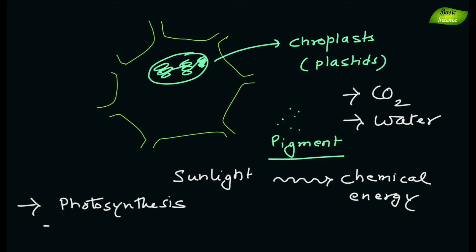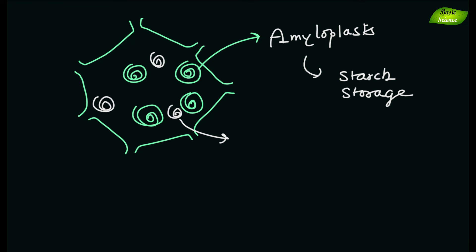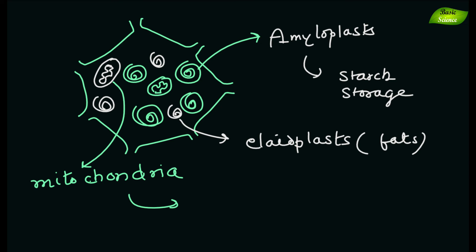Next are the amyloplasts, which are specialized in starch storage. There are elaioplasts that are specialized in fat storage, and chromoplasts used in pigment generation and storage. Plastids, like mitochondria, are believed to have developed as prokaryotic endosymbionts dwelling in the cells of an early eukaryotic progenitor of plants and algae. Plastid genomes include around 100 to 120 unique genes.